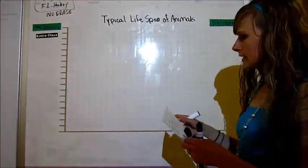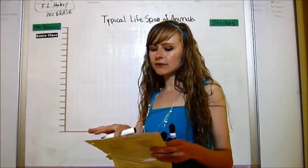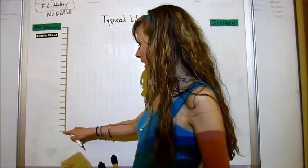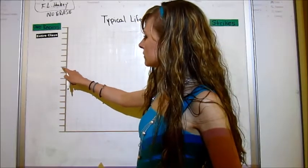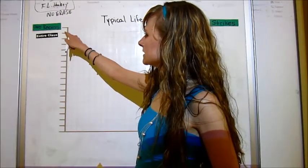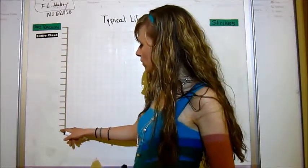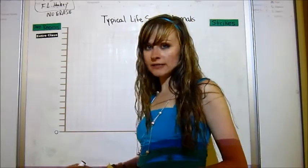Next up, what we want to do is we need to figure out a scale. So the largest we've got is 85 years. So let's see how many we have here. We've got 1, 2, 3, 4, 5, 6, 7, 8, 9, 10, 11, 12, 13, 14, 15, 16, 17, 18, 19. So if we skip counted by 5, let's see if it would work.